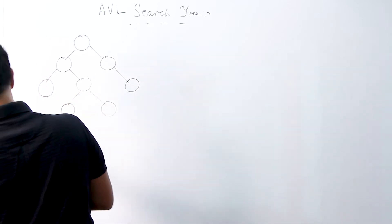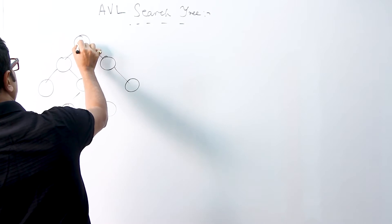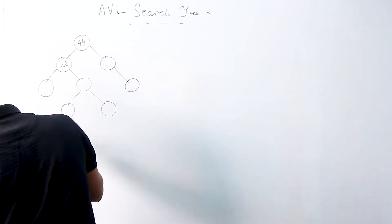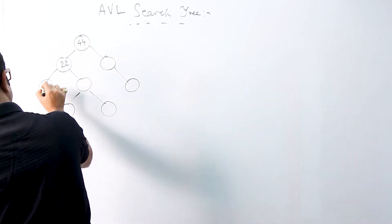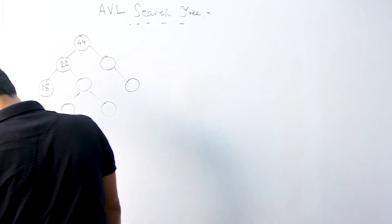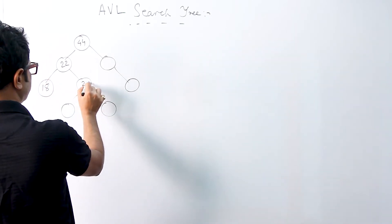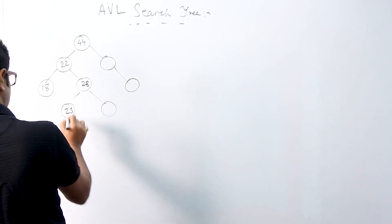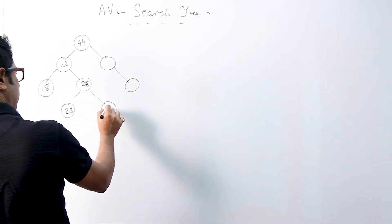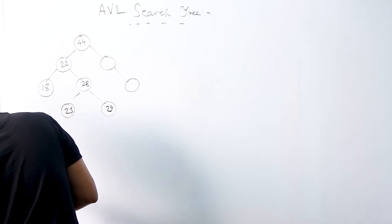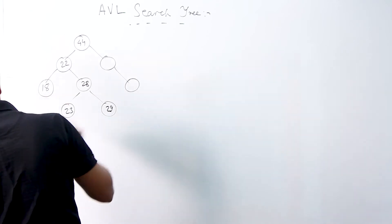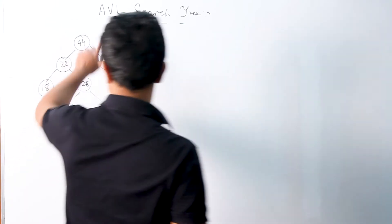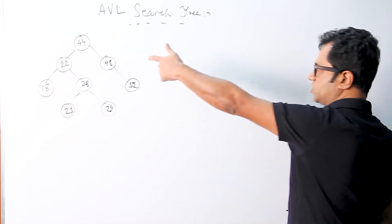So the AVL search tree is like this: the root is 44, with left child 22 and right child 48. Node 22 has left child 18 and right child 28. Node 28 has left child 23 and right child 29. The other two nodes are 48 and 52 respectively.